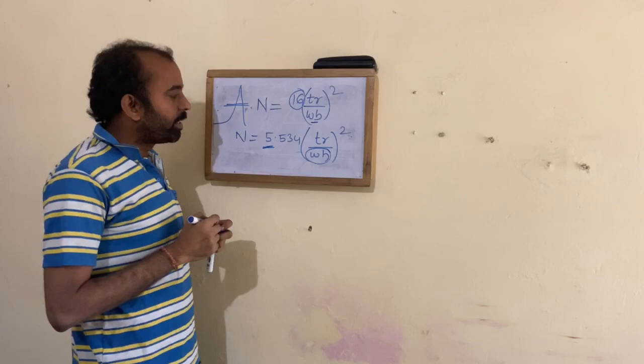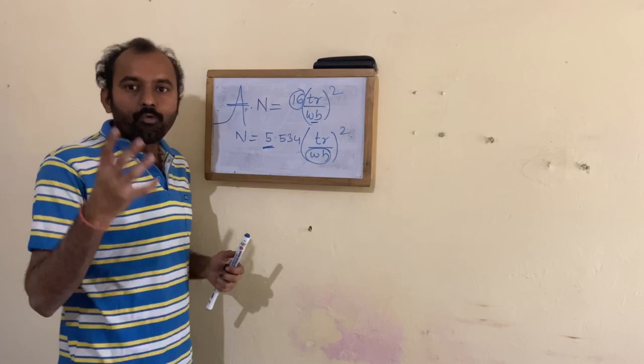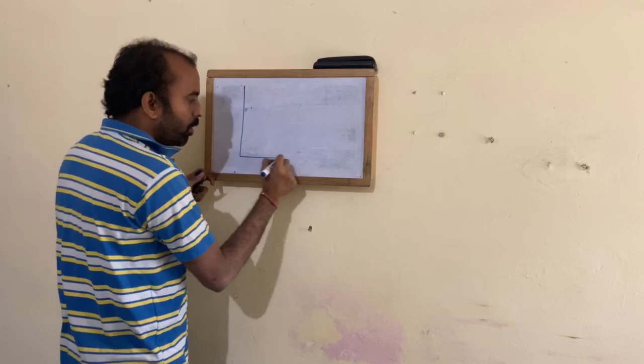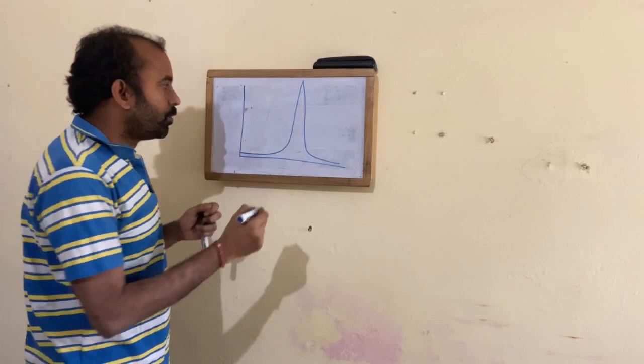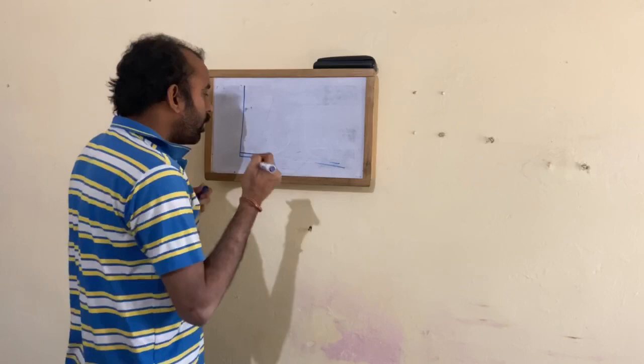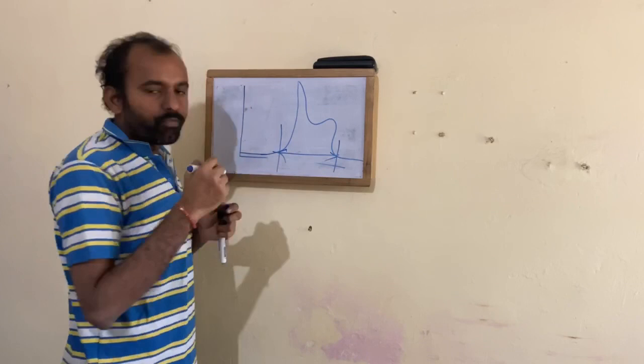When to use width at base versus width at half-height depends on how well the chromatogram is resolved. If the chromatogram is perfectly separated, take width at half-height. If the chromatogram has tailing or is not well separated, take the width at the base.